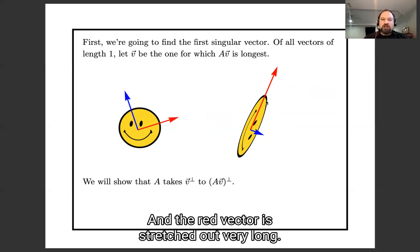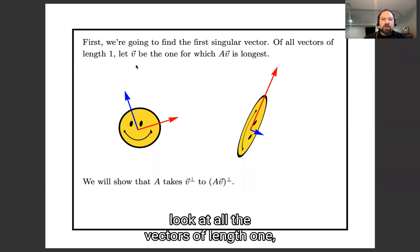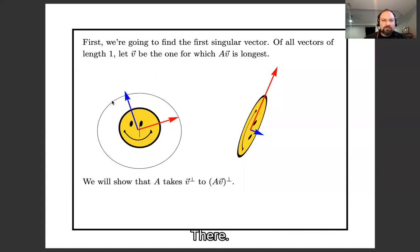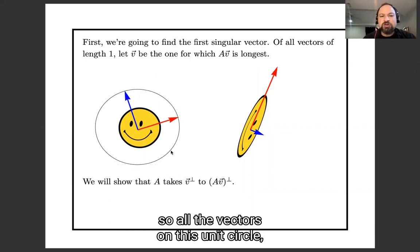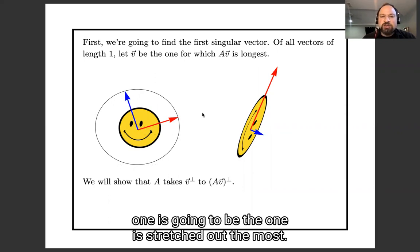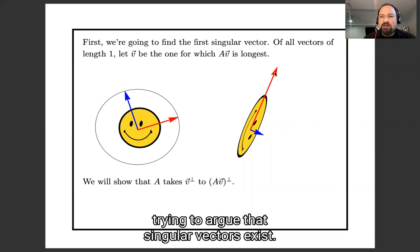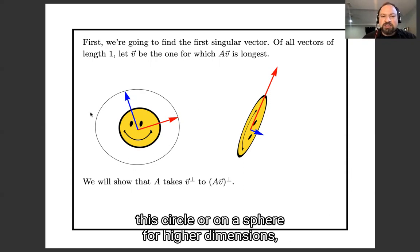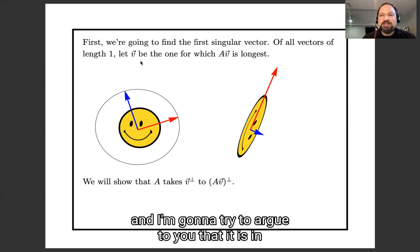The red vector is stretched out really long. If you look at all the vectors of length one — all the vectors on a unit circle centered at the middle of the smiley face — the first singular vector, the red one, is going to be the one that is stretched out the most. So our situation is we're trying to argue that singular vectors exist. There will be somewhere on this circle, or on a sphere in higher dimensions, some vector which is stretched the most. Let V be that vector, and I'm going to argue that it is in fact the first of our singular vectors.